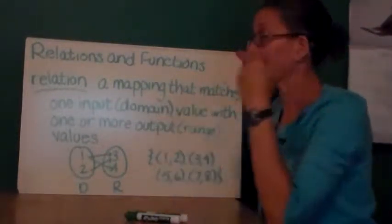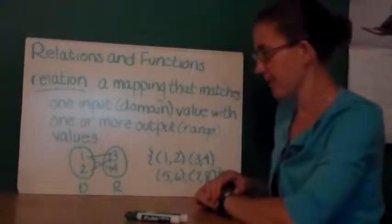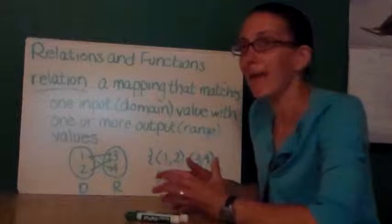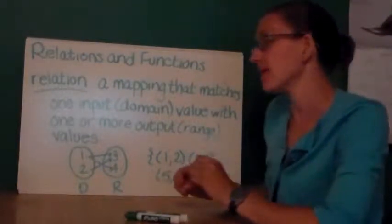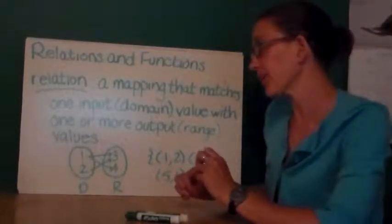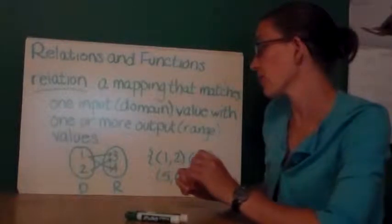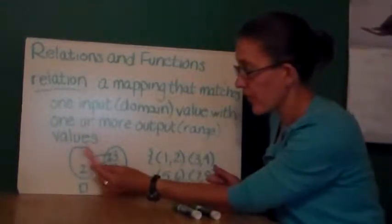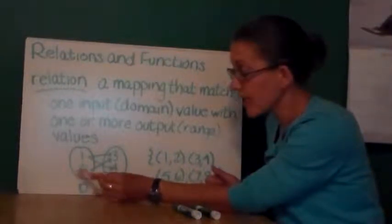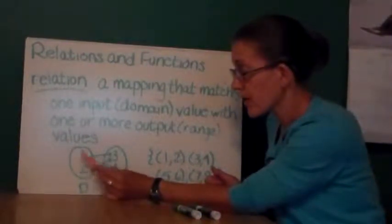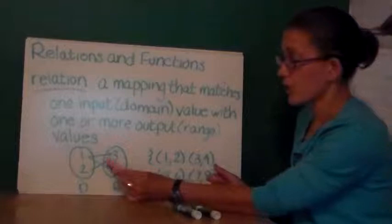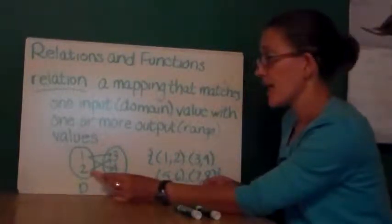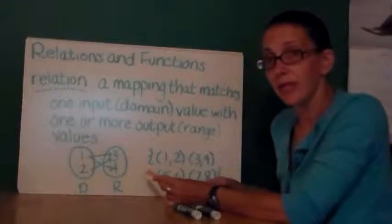Relations and functions are a really important concept in mathematics. A relation is a mapping or a matching, and it matches one input or domain value with one or more output range values. I want you to see here how this circle is the domain, it has the numbers 1 and 2. The number 1 has been matched with two values in the range. The number 2 has been matched with one value in the range.